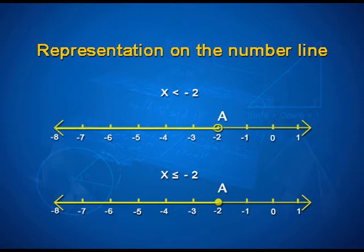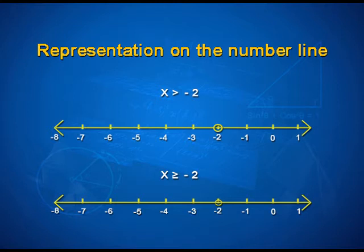Similarly, the inequality x ≥ -2 is marked on the number line. For x > -2, we have a hollow circle at point A and mark the region on the right-hand side of A. For x ≥ -2, there is a colored circle at point A and the inequality is marked on the right-hand side of point A.